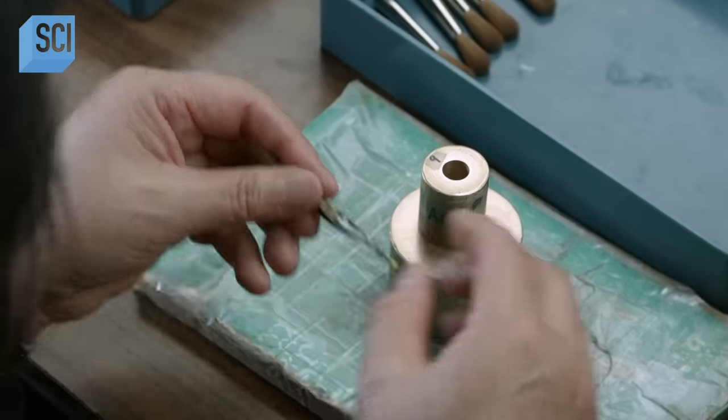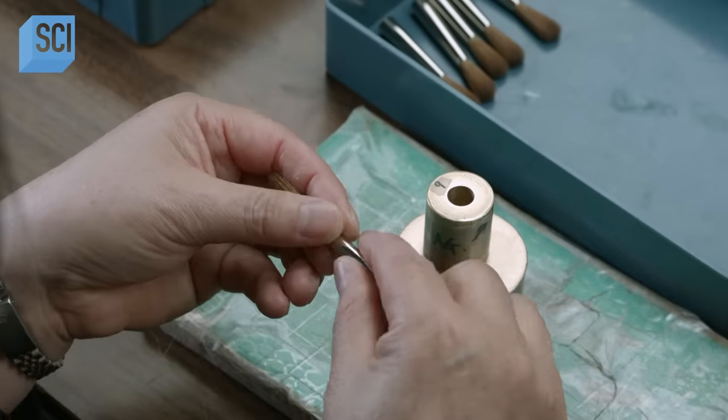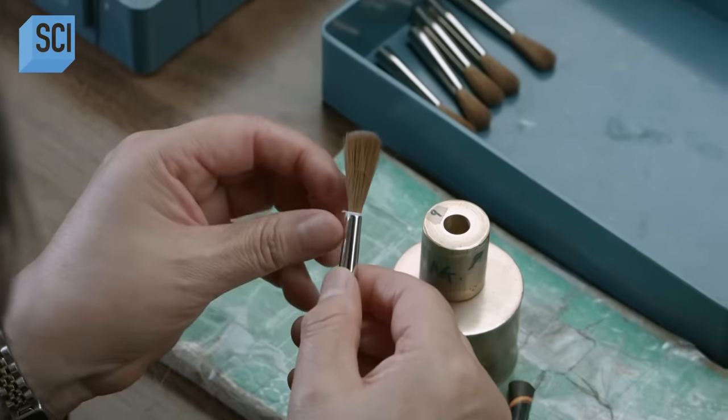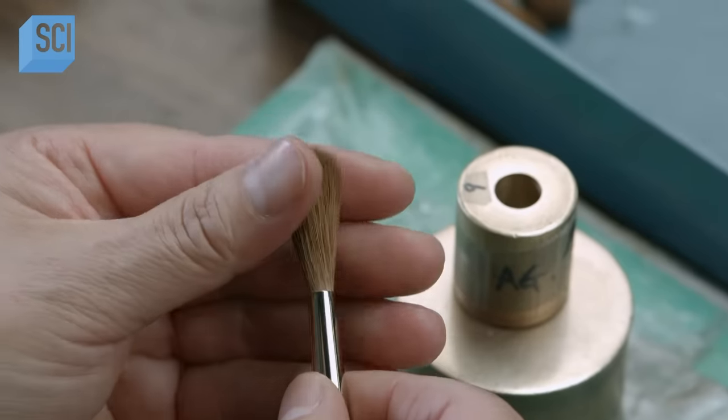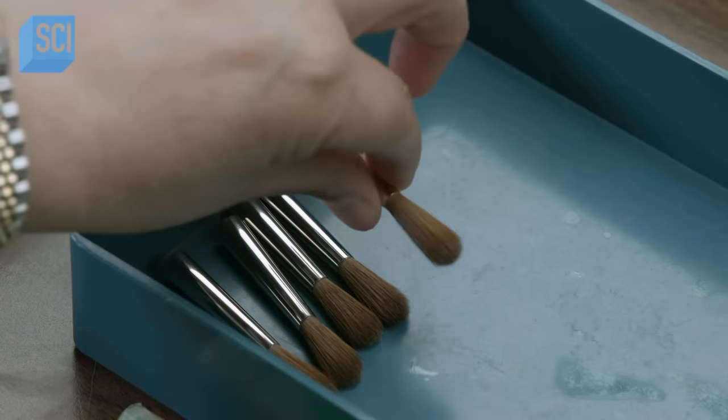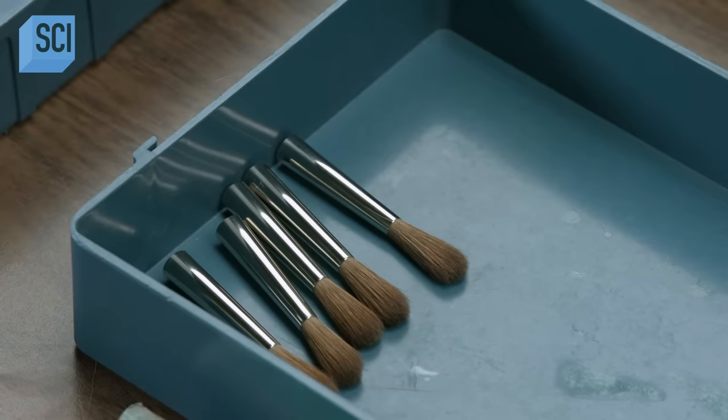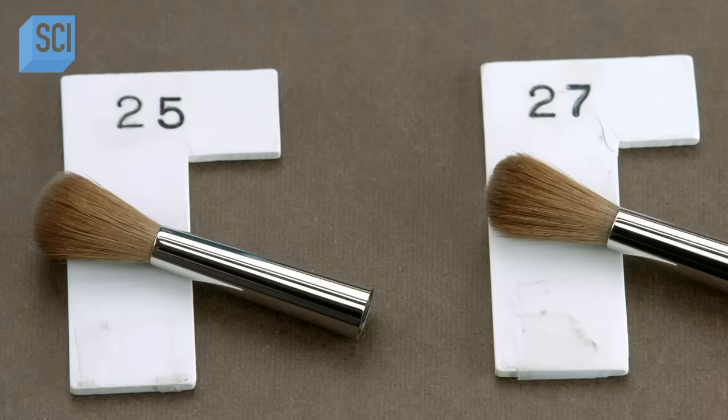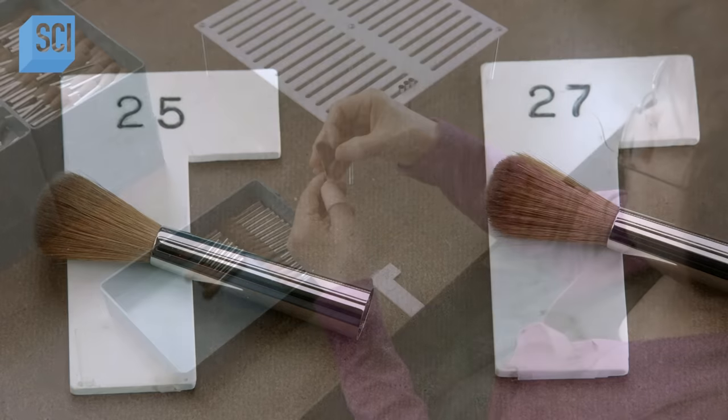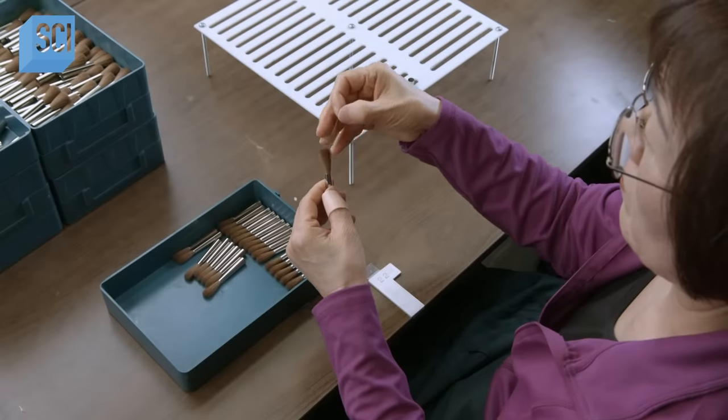She inserts the brush head back into the ferrule, then removes the string. Next, using a template, she adjusts what's called the length out of the brush head. Length out is how far the hairs protrude from the end of the ferrule.